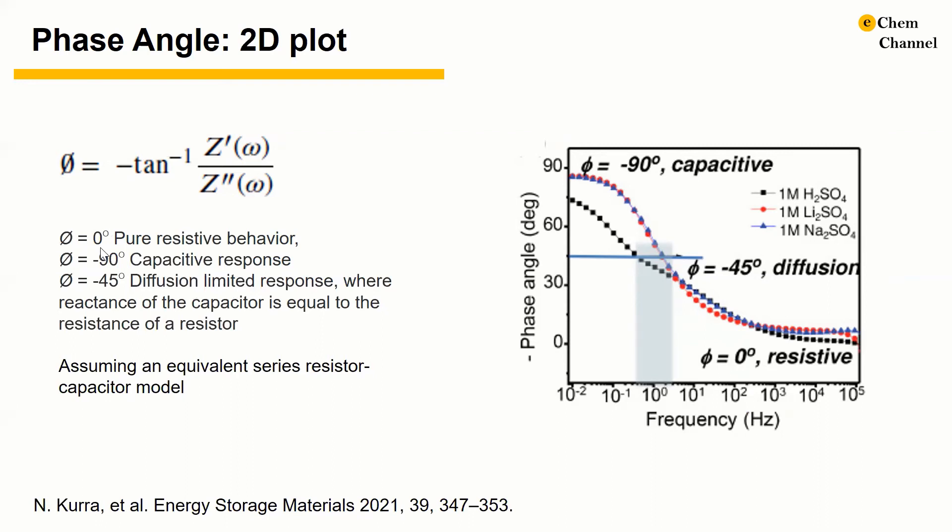The phase angle assuming an equivalent series resistor-capacitor model can be expressed in this equivalent circuit. Phase angle equal to zero means pure resistive behavior, equal to negative 90 degrees means capacitive response, and negative 45 degrees means diffusion limited response. So the rate limiting kinetics for charge storage can be inferred from the phase angle versus the frequency.